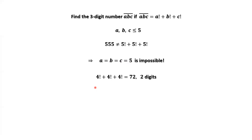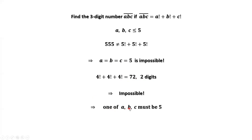Let's check if we don't have any 5: then we have 4 factorial plus 4 factorial plus 4 factorial equals 72, which is a two-digit number. We need a three-digit number, so this situation is impossible. This means at least one of A, B, C must be 5. Each digit is less than or equal to 5, and if there is no 5, the maximum number we can make is a two-digit number. Therefore, one of the digits A, B, C must equal 5.